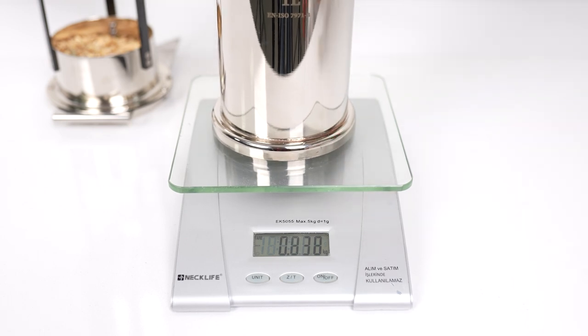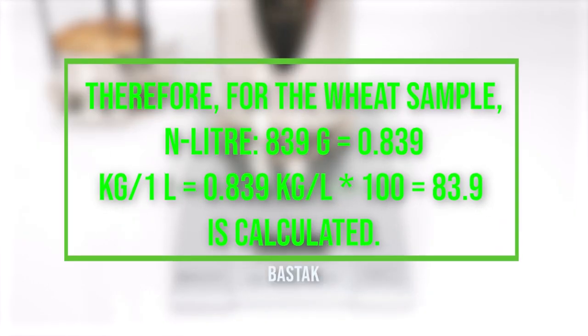The volume of n liter is 1 liter. Therefore, for the wheat sample: n liter 839g equals 0.839 kg/1L equals 0.839 kilograms per liter times 100 equals 83.9 is calculated.